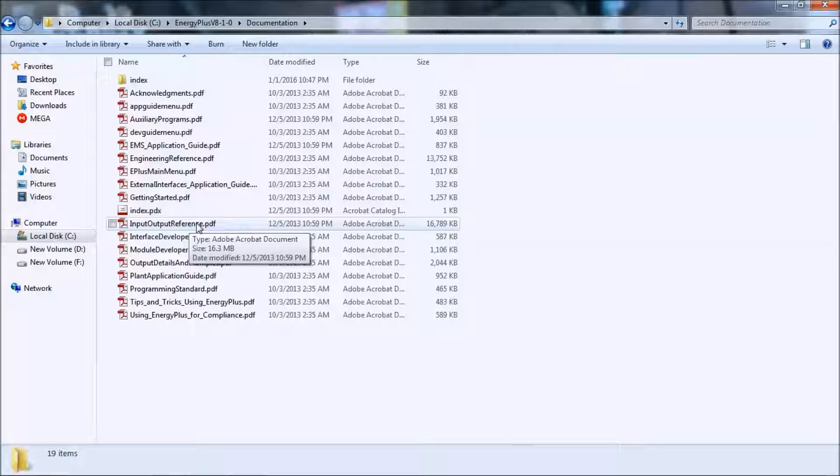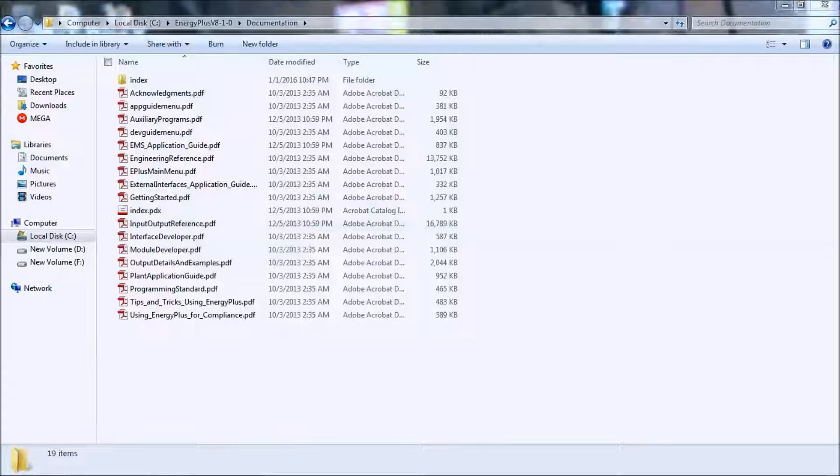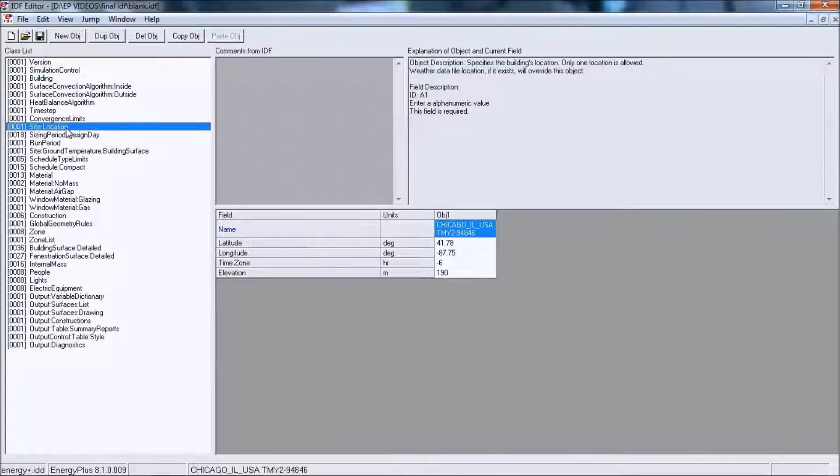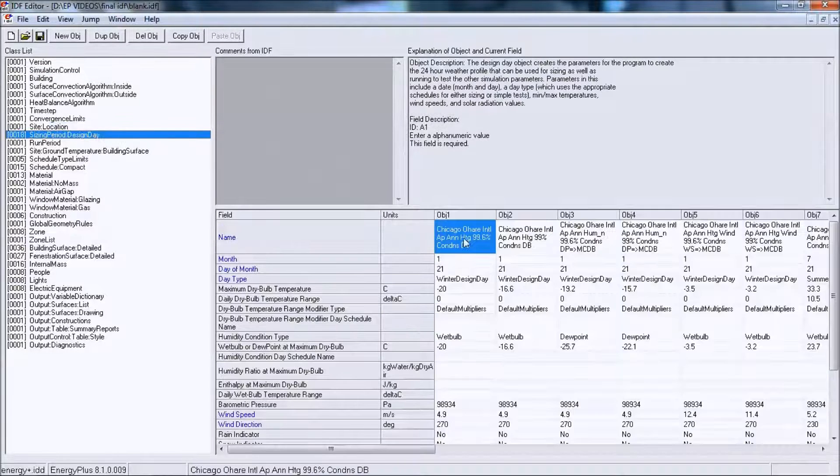I'll show you this file. Okay, this is a blank IDF file I made. This file does not contain HVAC objects - it has everything else. From starting, this has version, simulation control, and the site location. I've kept same Chicago. I've added some more design days from DDY file.